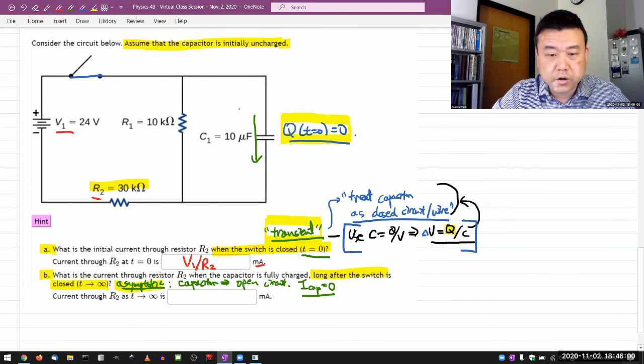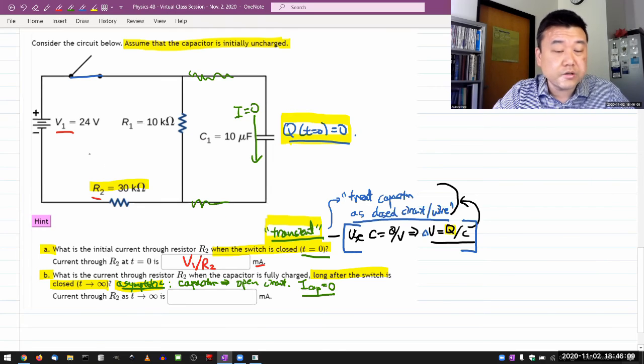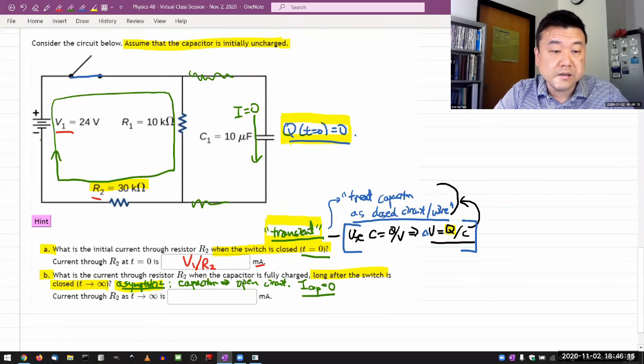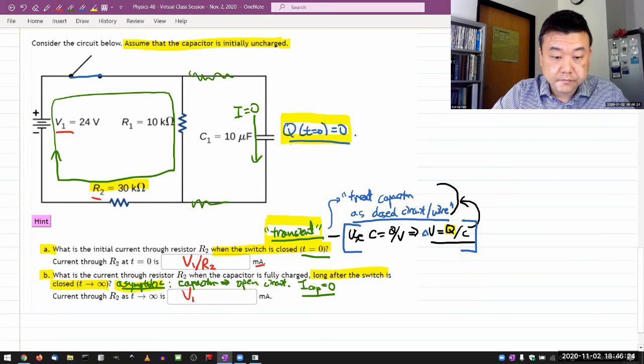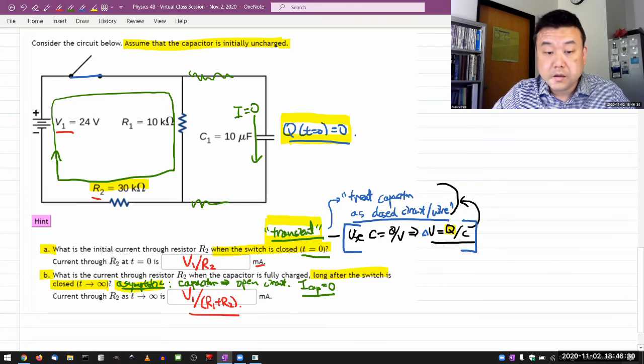which is the current through capacitor is zero. Oh, then I can probably just ignore this entire branch all together. So, the circuit basically looks like this here. It's simply a single battery in series with two resistors. So, the current there is going to be V1 divided by the sum of the two resistances, R1 plus R2.